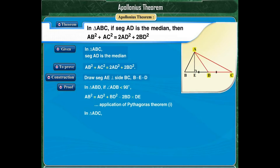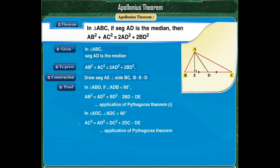In triangle ADC, angle ADC is an obtuse angle. Therefore, by application of the Pythagoras theorem, we get AC squared is equal to AD squared plus DC squared plus 2DC into DE. But in triangle ABC, AD is the median and hence BD is equal to DC. So, by replacing DC with BD, we get AC squared is equal to AD squared plus BD squared plus 2BD into DE.